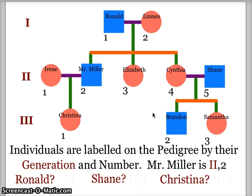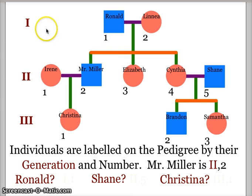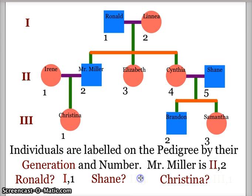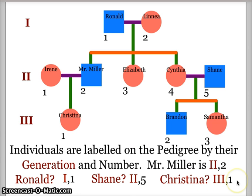So this is part of my family tree. I am generation two, number two. My dad Ronald is generation one, individual one — signified by Roman numeral I, 1. Shane, my brother-in-law who married my sister Cindy, would be generation two, individual five — Roman numeral II, 5. My daughter Christina is the third generation — Roman numeral III, individual 1. In each case, you give each individual a Roman numeral for their generation and an Arabic number for their place in that generation.